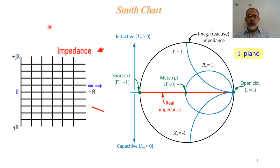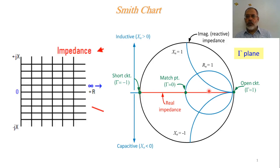In the previous video we saw how to map the impedance or normalized impedance plane to the reflection plane, introducing what we call the Smith chart. In the Smith chart, the real axis on the normalized impedance plane — ranging from R normalized equal 0 to infinity — is mapped from gamma equal minus 1 to gamma equal 1, where gamma equal minus 1 corresponds to real impedance equal 0 (short circuit) and gamma equal 1 corresponds to real impedance equal infinity (open circuit).